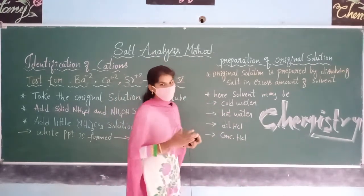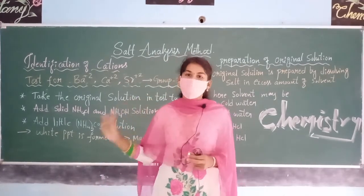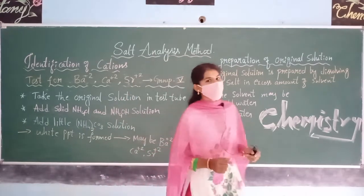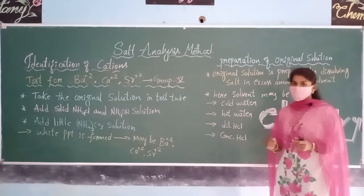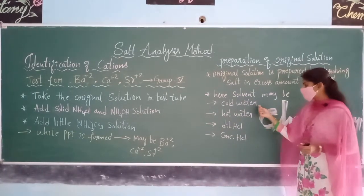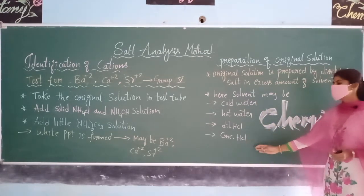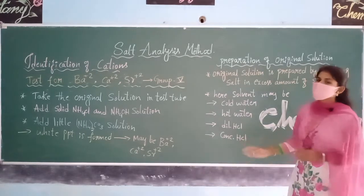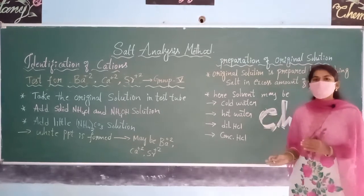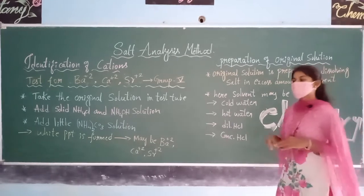The prepared original solution is taken for testing the cations. To prepare it, we take the salt and check its solubility condition with any one of four solvents: cold water, hot water, dilute HCl, or concentrated HCl. Whichever solvent completely dissolves the salt is added in excess to prepare the original solution.